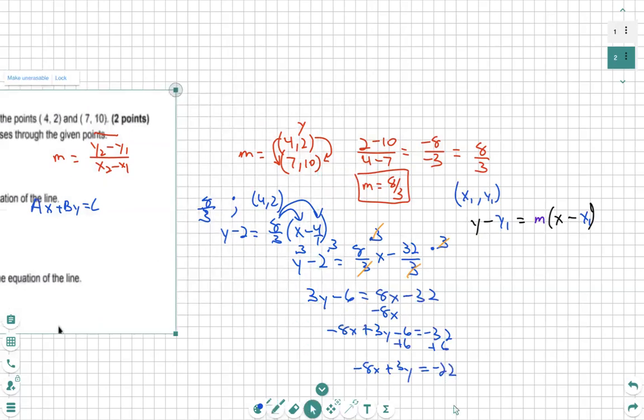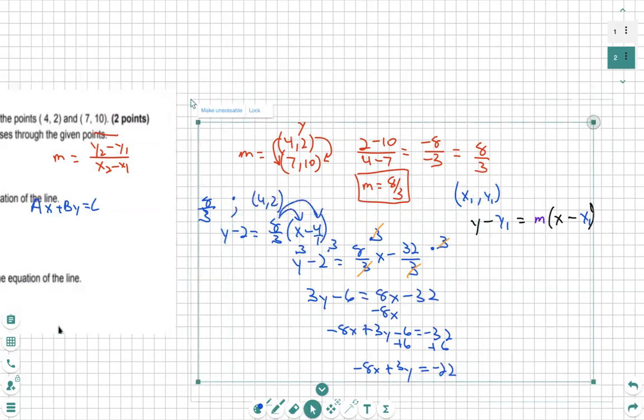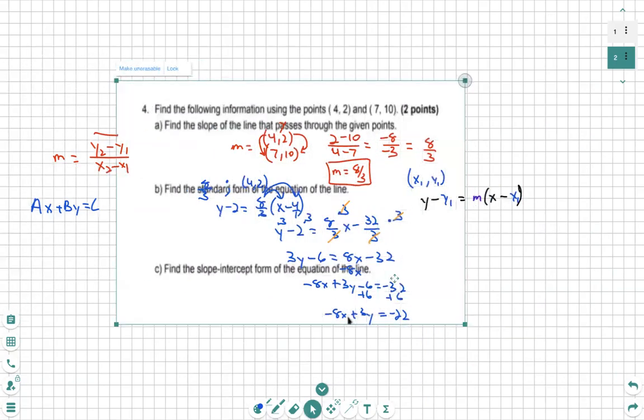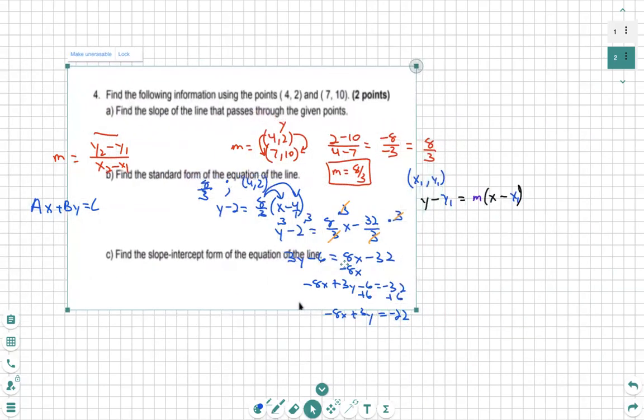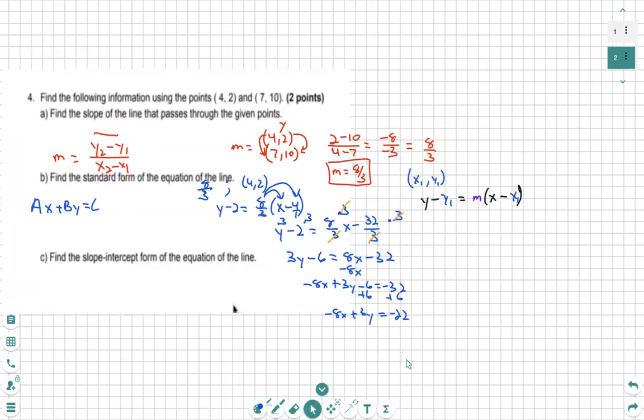And then let's just make this all a little smaller. And then what we're going to do is make sure that our a is positive. Multiply everything by negative 1. And there we go. That is our equation in standard form. So that is the answer to b.